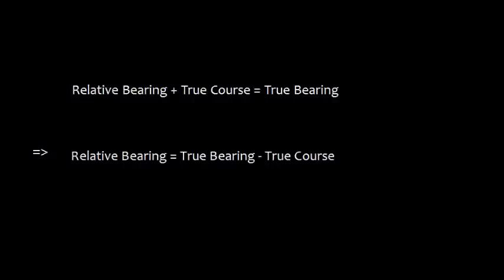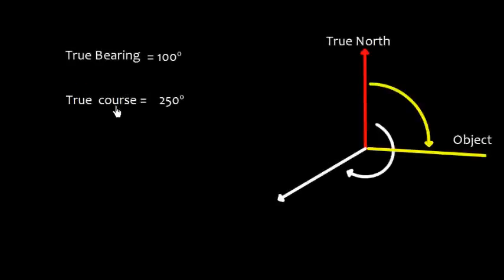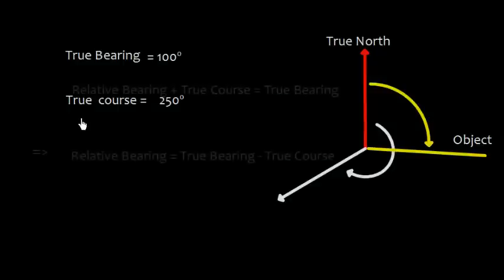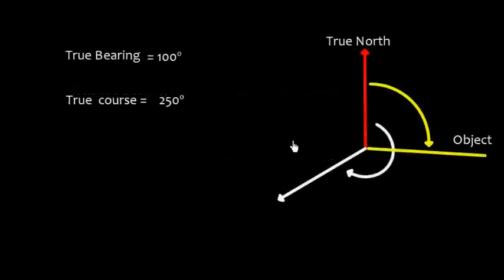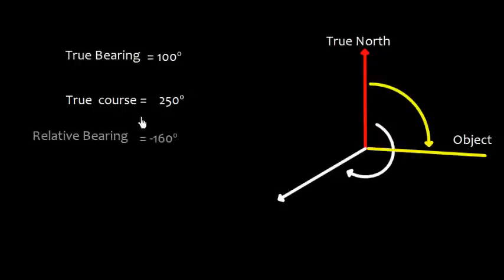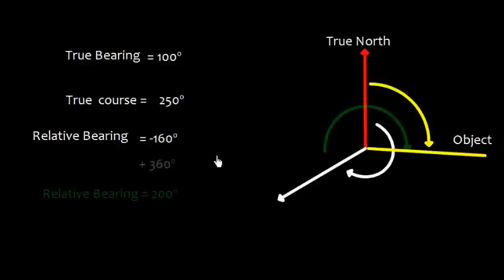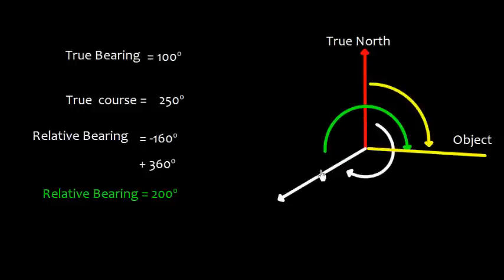Alternatively, relative bearing equals true bearing minus true course. Suppose true bearing is 100 degrees and true course is 250 degrees. The true course of 250 degrees goes from true north to the ship's head — that is the direction of the ship's head. Applying the formula: relative bearing equals 100 minus 250, which is minus 150 degrees. Since relative bearing cannot be negative, we add 360 degrees, giving a relative bearing of 200 degrees — measured clockwise from the ship's head to the object.